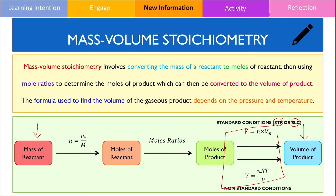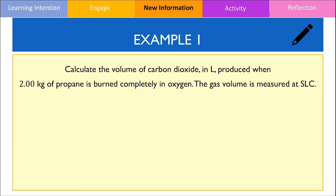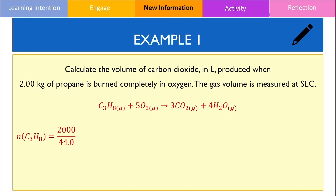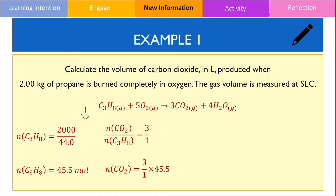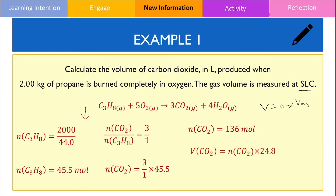Let's go through an example for each of these two scenarios. In the first example, we want to calculate the volume of carbon dioxide produced in litres when 2 kg of propane is burned completely in oxygen under standard laboratory conditions. We write the balanced chemical equation, then calculate the number of moles of propane by dividing by its molar mass — note that 2 kg has been converted to grams. The molar ratio gives the number of moles of carbon dioxide as 3 times the moles of propane, giving 136 moles. Using V equals n times Vm where Vm equals 24.8, we get 3.38 × 10³ litres.